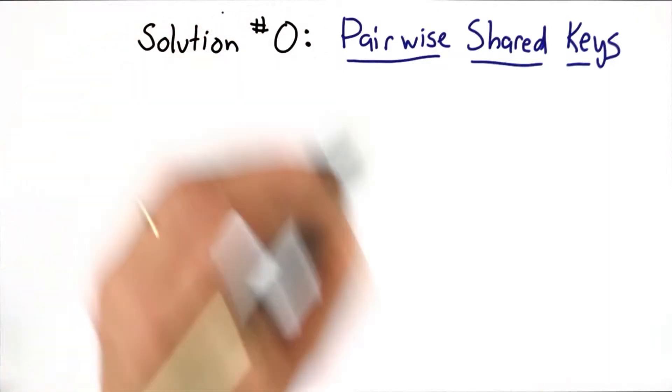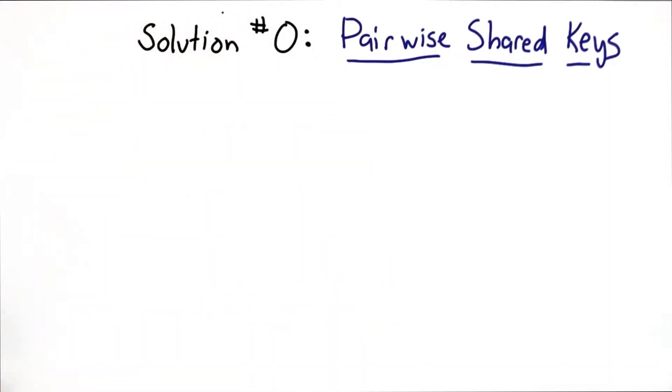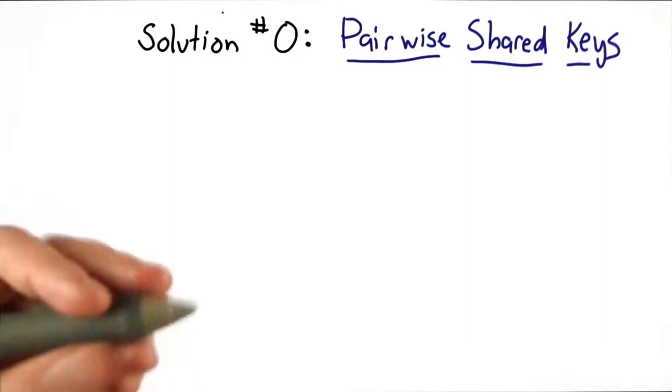So the first approach I'll talk about, I'll call solution number 0 because it's really not even approaching a solution, is to have pairwise shared keys.